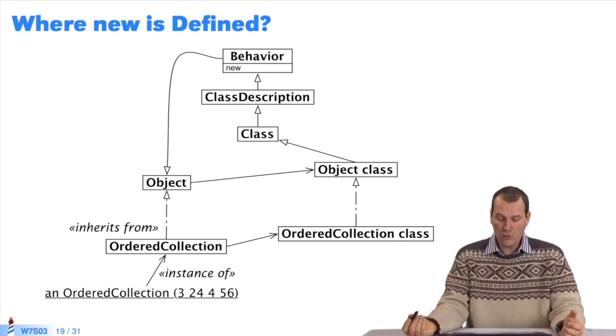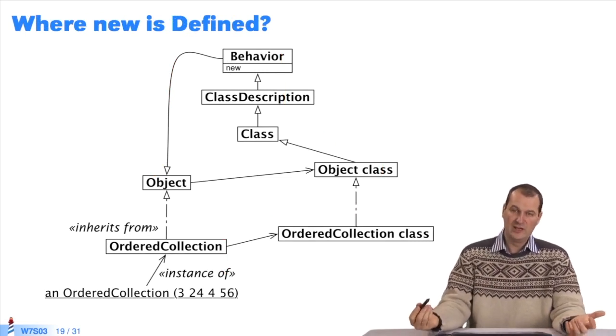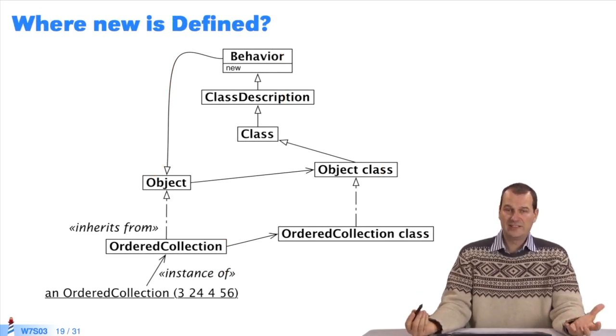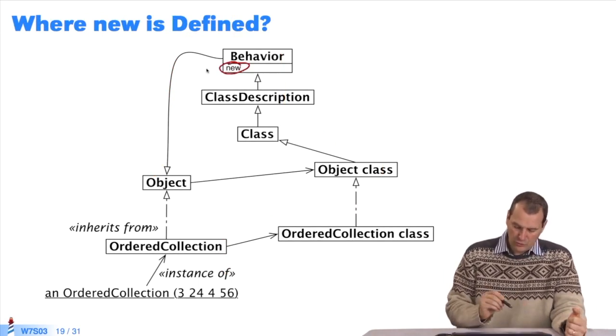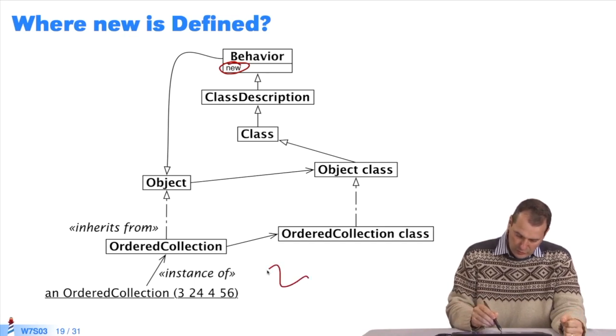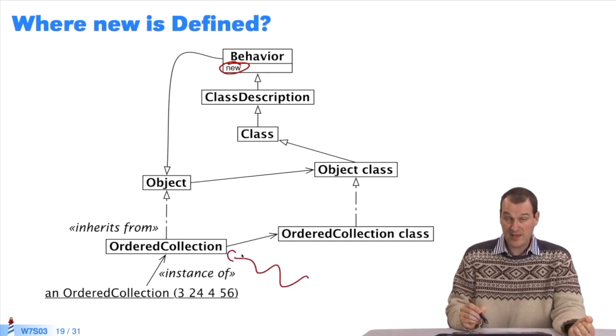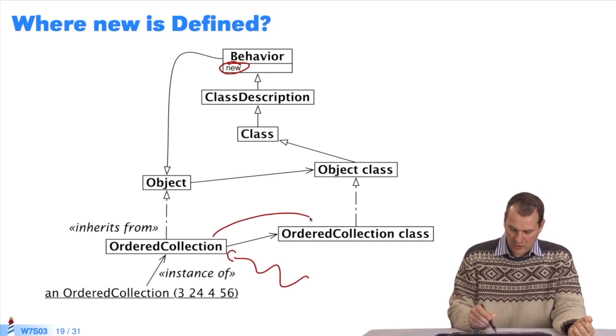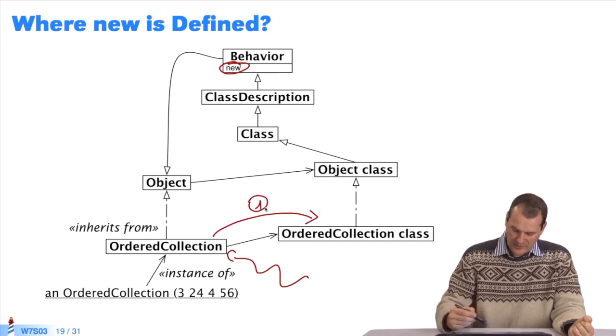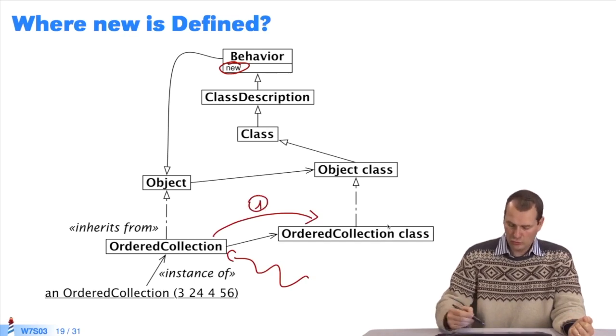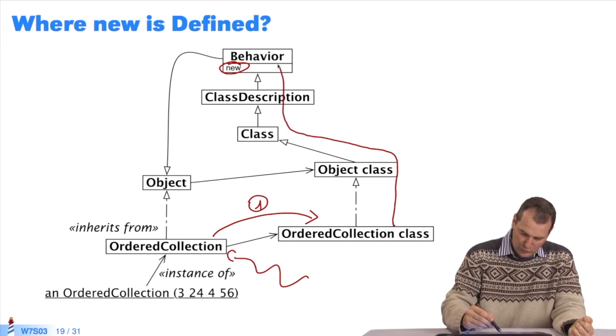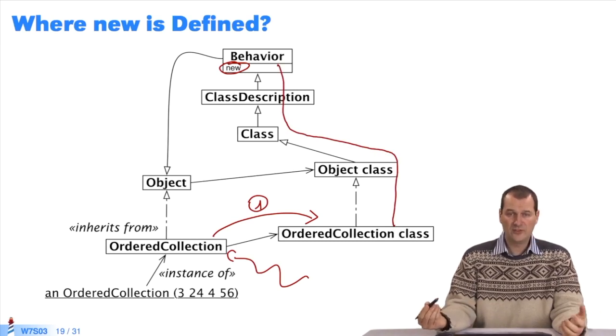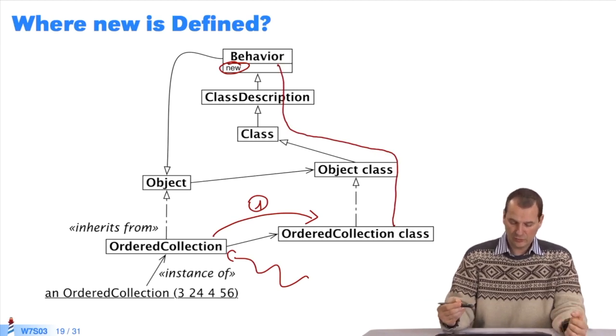Now we want to know where new is defined. The method for creating instances is defined in behavior. When I send the new message to ordered collection, what happens? First, I search in the class. Suppose that new is not redefined in the inheritance. So I search all of the superclasses until we find new. In a lookup, we search for a method and execute it on the receiver.